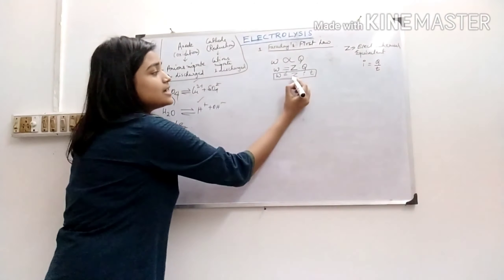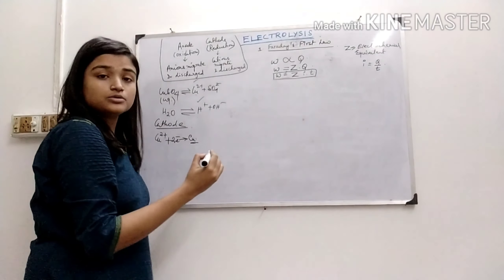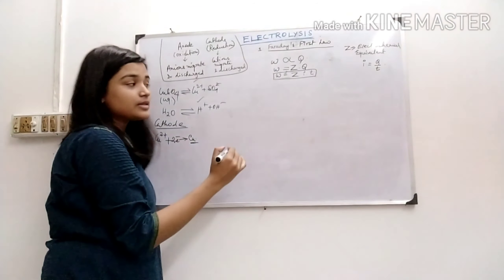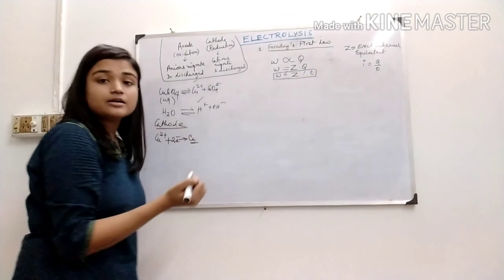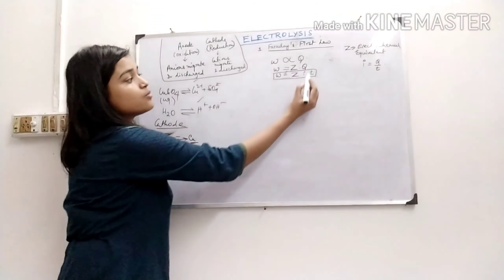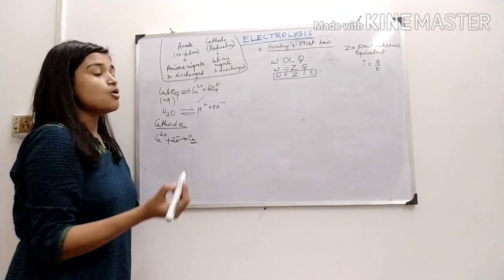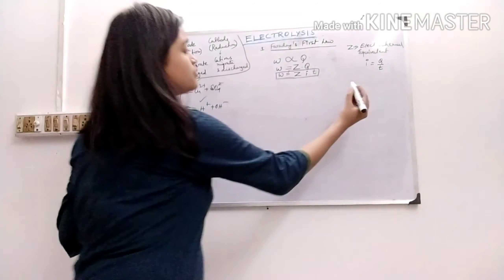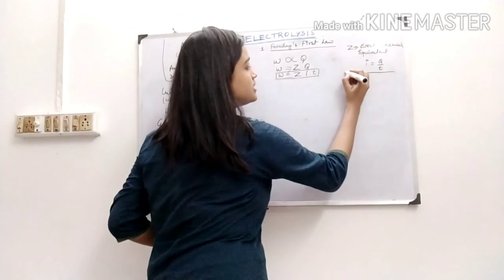Now, what is Z? Z is defined as the amount of weight that will be deposited on the electrode — the equivalent weight deposited on the electrode when one ampere of current is passed through one cell for one second. Let me now discuss an important related concept.